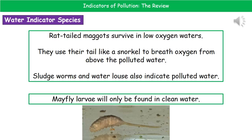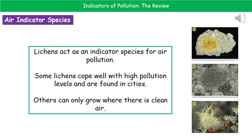Two others that indicate polluted water are sludge worms and water lice. If, however, we find lots of mayfly larvae present, they will only be found in clean water. So it's not just the species found in polluted water that matter — some species are only found when the water is not polluted.